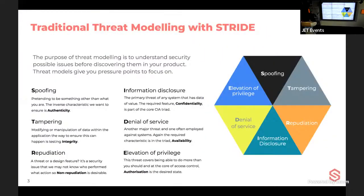Traditional threat modeling is usually done with STRIDE. Adam Shostack, who is involved with OWASP and threat modeling, has done a lot of work around STRIDE. At a high level, STRIDE covers Spoofing, Tampering, Repudiation, Information Disclosure, Denial of Service, and Elevation of Privilege. Adam's gamification version of STRIDE is called Elevation of Privilege, named after that final step.